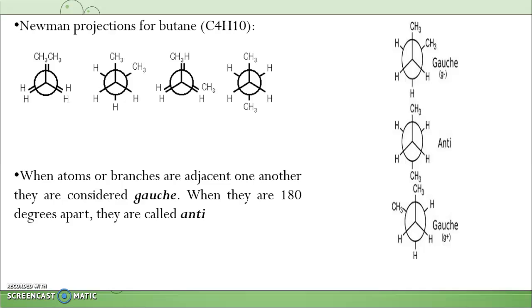The interference will be lower when they rotate about their own axis to give a staggered conformation. When they are in opposite positions, it will produce a staggered conformation which has lower energy compared to gauche conformation. When atoms or branches are adjacent, next to one another, they are considered gauche. When they are 180 degrees apart, they are called anti.